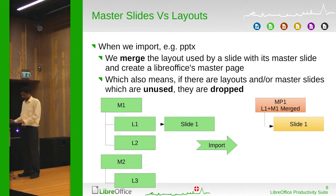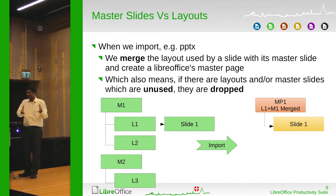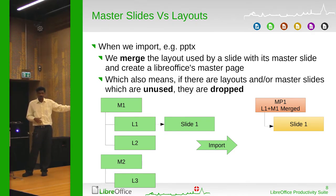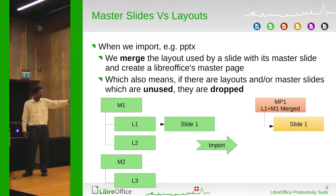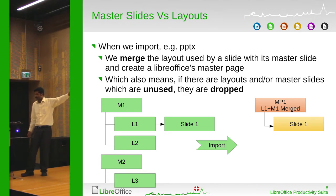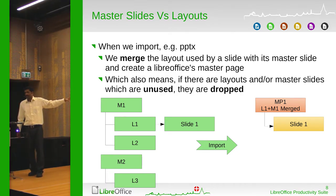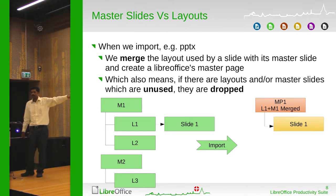Now, what happens when we actually import a PPTX or PPT file into LibreOffice? Let's say you have one master slide and two layouts L1 and L2, and a second master slide with layout L3, and one slide in the deck using layout L1 and hence master page 1. When you import this, you would see a merged master slide in Impress and a slide attached to it. The rest of the items are essentially dropped completely — you get the contents of M1 and L1 depending on what parts are being used.